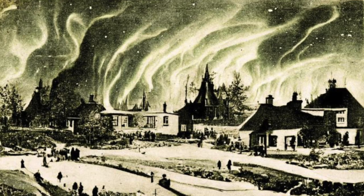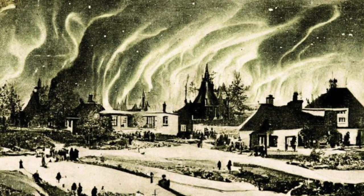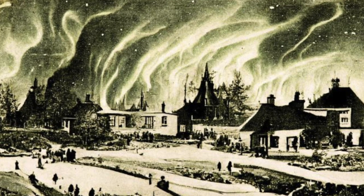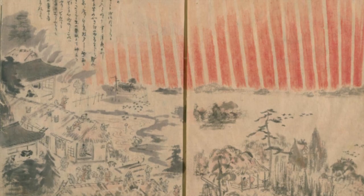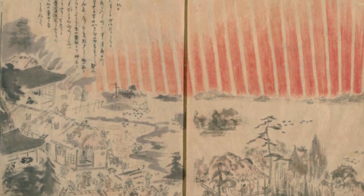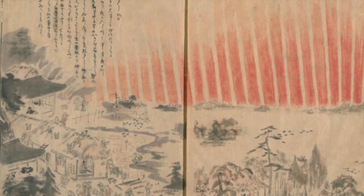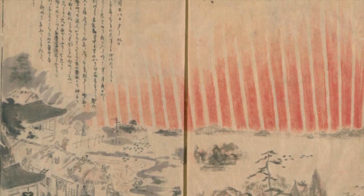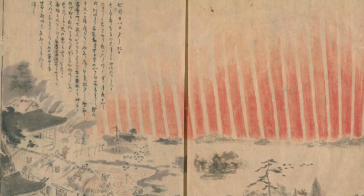Yes, the Carrington event is rare but it's not unique, and for all we know, there could have been much larger storms in history. For example, red auroras were seen in Japan and China in September 1770, and the event was witnessed firsthand by Captain Cook, viewing from Timor Island south of Indonesia.